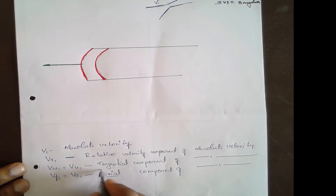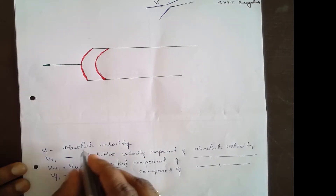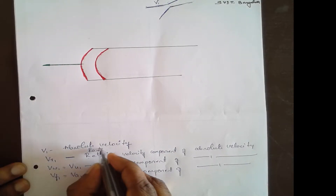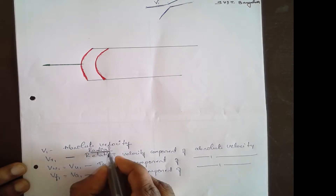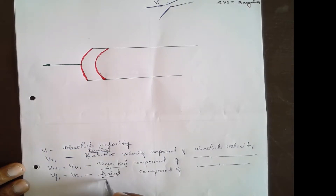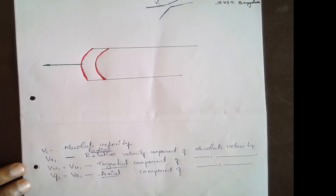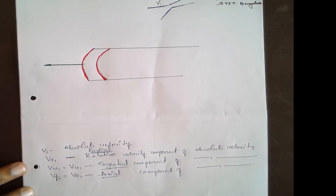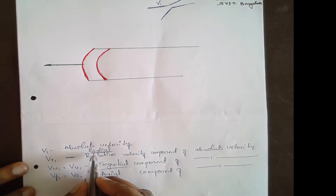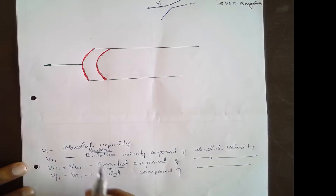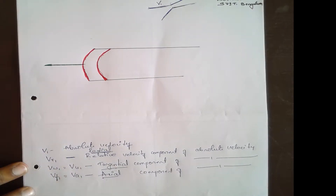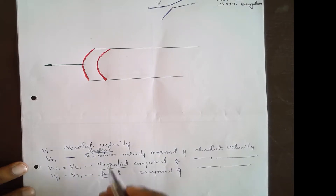Axial means parallel to the axis of rotation. Tangential means perpendicular to the axis of rotation. Radial means along the radius of curvature, or perpendicular to the axis of rotation. So the three types of components are axial, tangential, and radial.